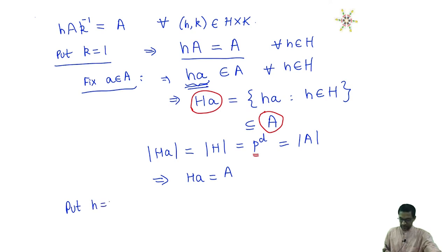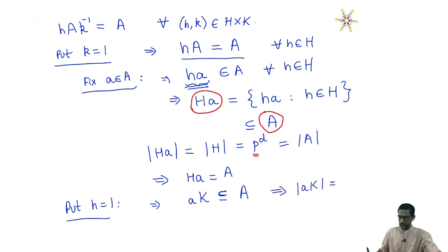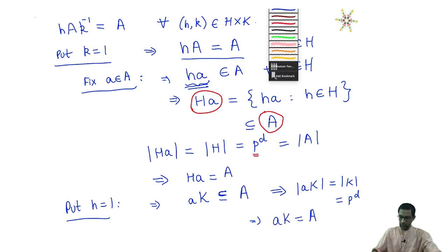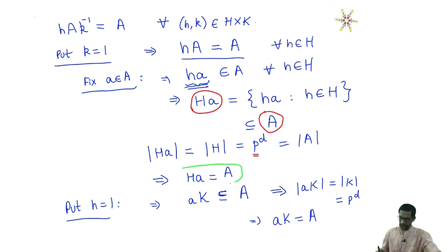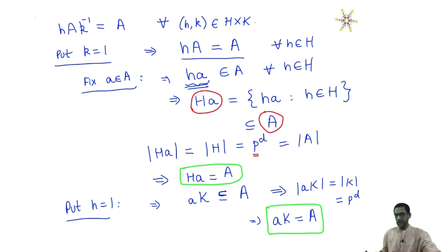Similarly, we can put H equal to 1 and conclude by the same token that if I take this element a and multiply it on the right by elements of K, then A · k is a subset of A. Again, because the cardinality of A · k is the same as the cardinality of K, which is P power D, and that equals the cardinality of A, this means A · k equals the set A. So we have made two conclusions: H · a equals A, and A · k equals A.